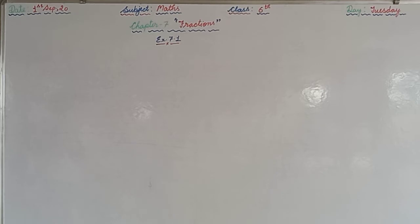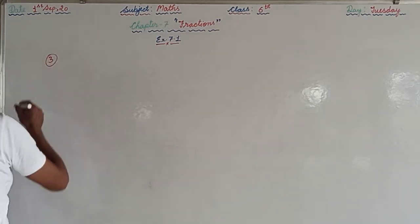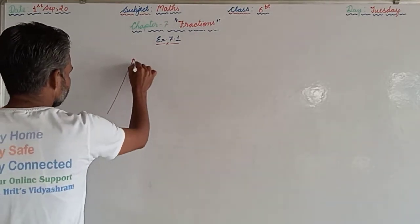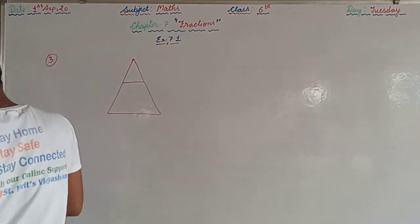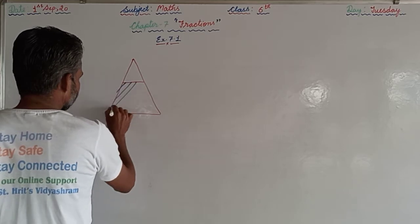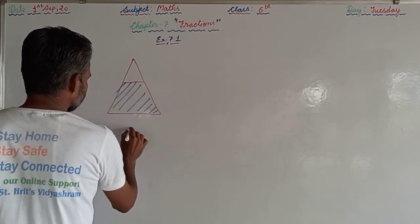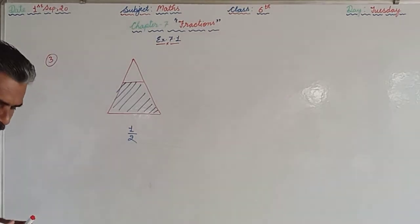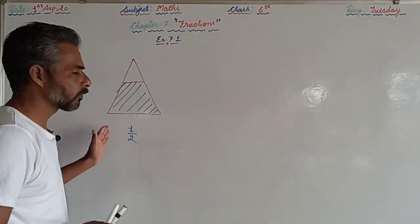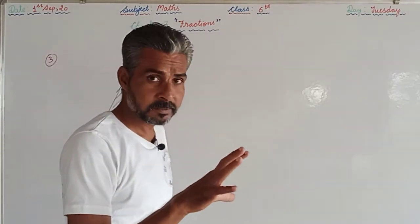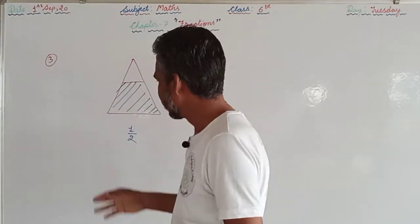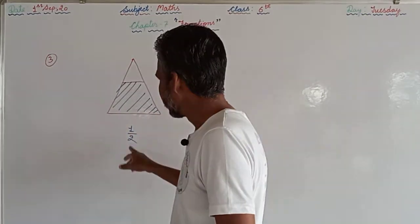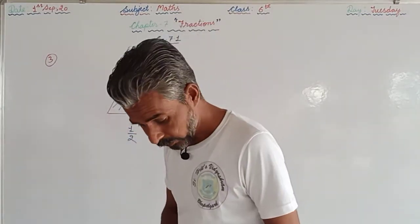In Question 3, the first part shows a triangle with one part shaded, and it asks whether it represents one-half. This does not represent one-half because in fractions all parts must be equal. Here, the two parts of the triangle are not equal — one is larger than the other — so this does not represent one by two.